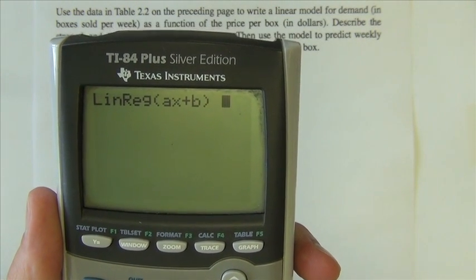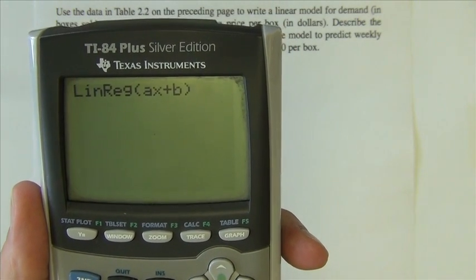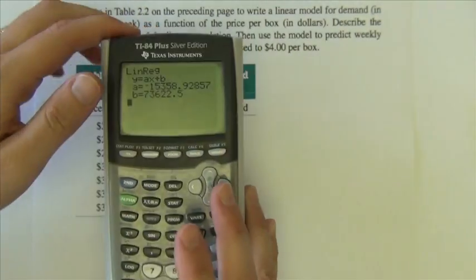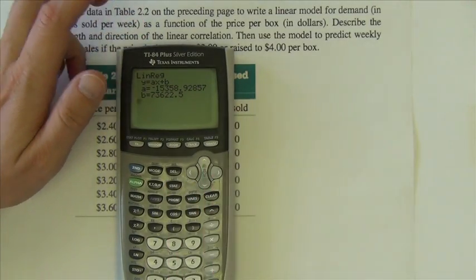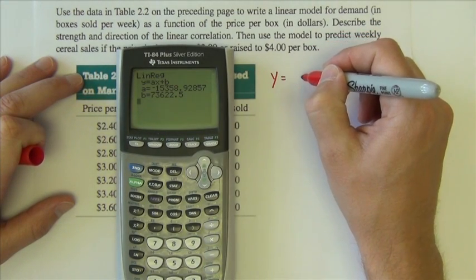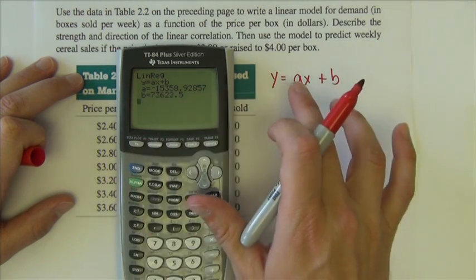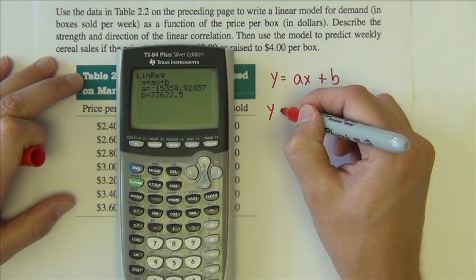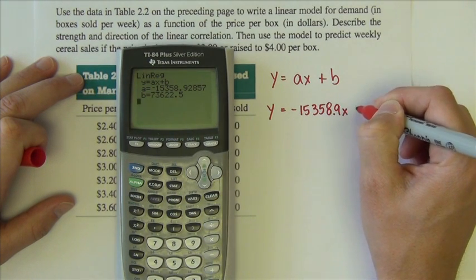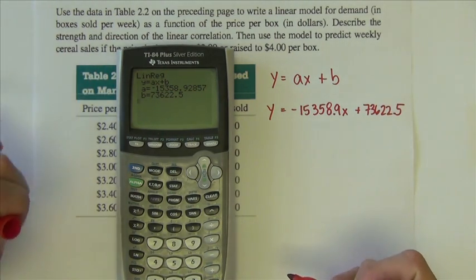You can tell the calculator to go to whatever list you want, but as long as the numbers are in L1, L2, X is in L1, Y is in L2, then it's going to compute it for us just fine. So I'm just going to hit enter on this. Now let's put this down so we can write down what we've got. It tells us the linear regression model is of the form Y equals AX plus B. There is our equation of our best fit line.